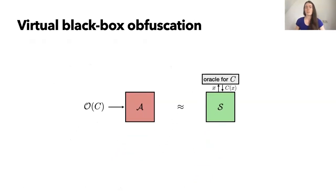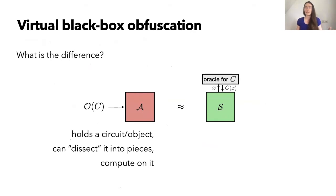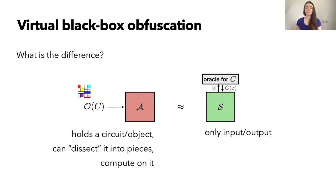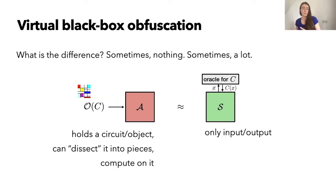What's the difference between getting an obfuscation of C as an input and just interacting with an oracle? Getting an obfuscation is quite significant — it allows the adversary to hold the circuit, break it up into smaller components, and generally compute on it. For the Piet program example, you could try changing the blue area to a different color, or running the interpreter on the upside-down image. The simulator, on the other hand, really only sees inputs and outputs. For some function families, like point functions, this difference doesn't matter and those are obfuscatable. But for others, the adversary can really take advantage of having the object to manipulate. Barak et al. showed the existence of such an unobfuscatable function family, proving that virtual black box obfuscation is impossible in general.